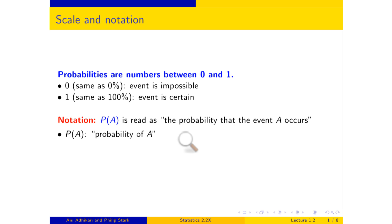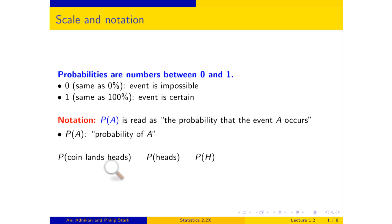When I write, I won't be terribly formal. I might write P(coin lands heads) — the chance that the coin lands heads. Or if I'm not feeling energetic, simply P(heads). Or P(H), capital H, to remind me that it's heads. It is worthwhile to note that 'coin lands heads' is clear when there is one coin tossed once, but the minute you have more than one coin or more than one toss, then P(heads) or P(H) is not entirely nailed down.